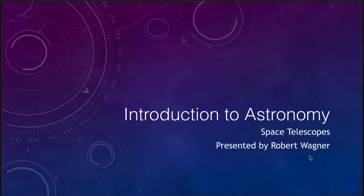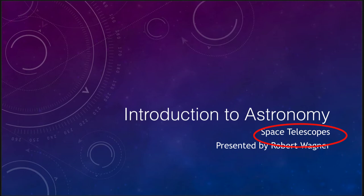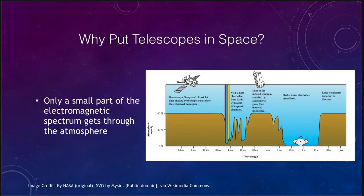Greetings and welcome to the introduction to astronomy. In this lecture we are going to talk about space telescopes — telescopes that are put out in space — and astronomers do this for good reason. Some things simply cannot be seen from the surface of the earth. Visible light makes it down to the surface of the earth, as do radio waves, but when we look at other types of electromagnetic radiation, only a very small portion of the electromagnetic spectrum is able to get through the atmosphere.